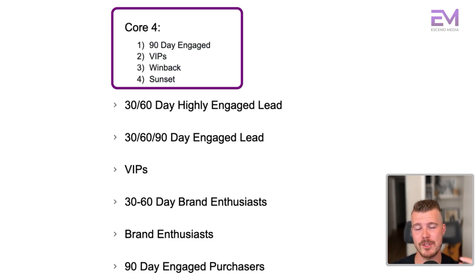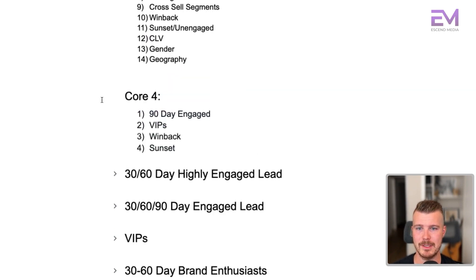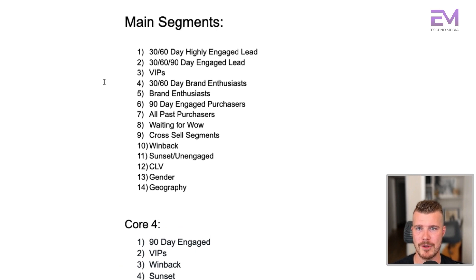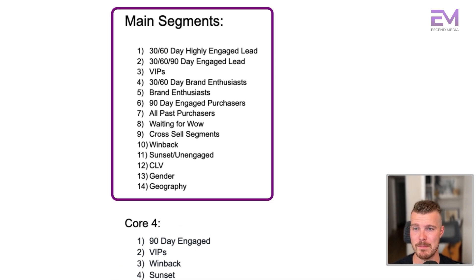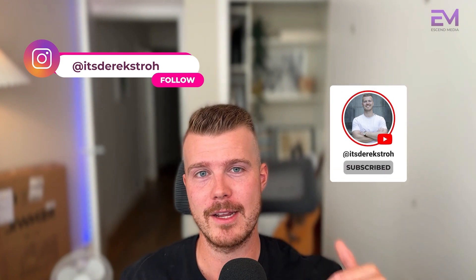Let me scroll up and review those key segments again. The core four segments you're going to want to use are the 90-day engaged, VIPs, win back, and sunset segment. Don't get overwhelmed — start with those four and then build out the others based on what's required for you. This is the last video of the segmentation series. Watch all three videos if you haven't already — it's very important to maintain good email health and to make sure the right people are getting the right message at the right time.